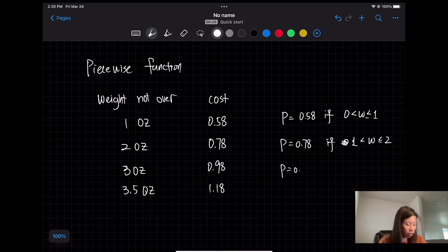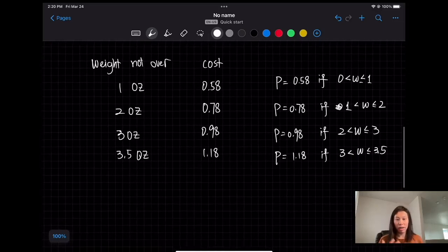And the price is going to be 98 cents if this is between 2 to 3 ounces, and the price is going to be 1.18 if the weight is between 3 and 3.5 ounces. It's a flat rate even though you are in between the numbers.